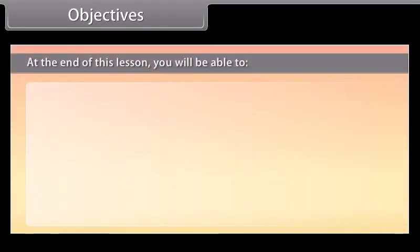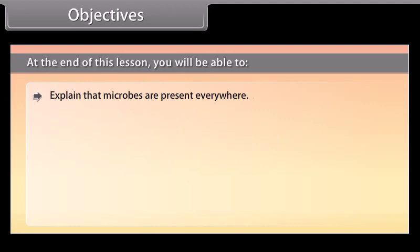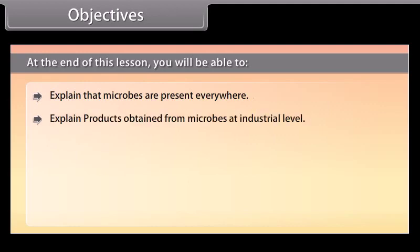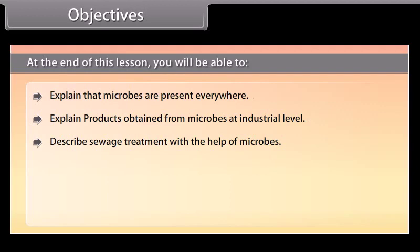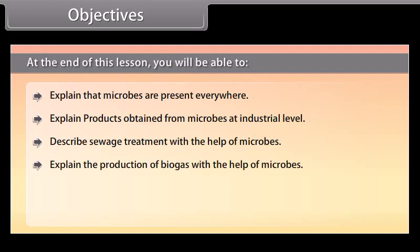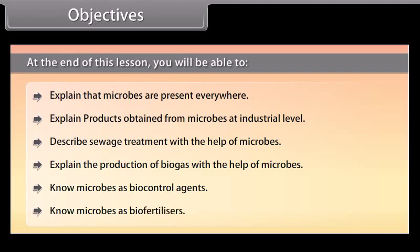Objectives. At the end of this lesson, you will be able to: explain that microbes are present everywhere; explain products obtained from microbes at industrial level; describe sewage treatment with the help of microbes; explain the production of biogas with the help of microbes; microbes as biocontrol agents; and microbes as biofertilizers.